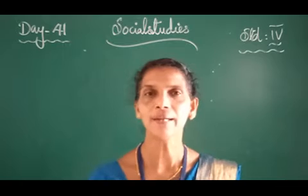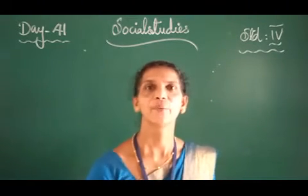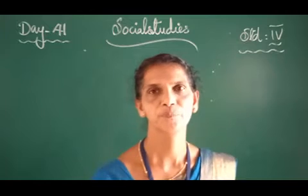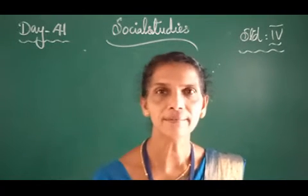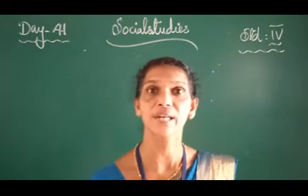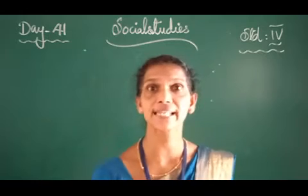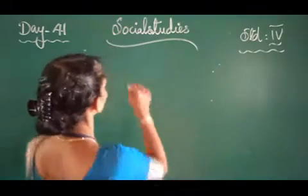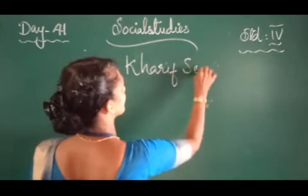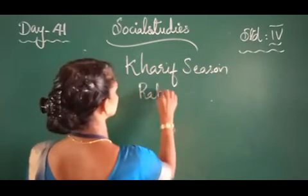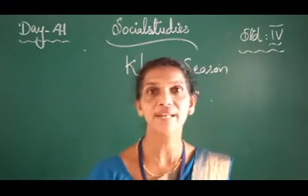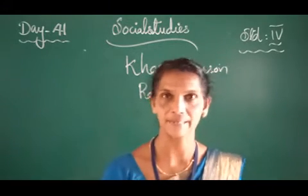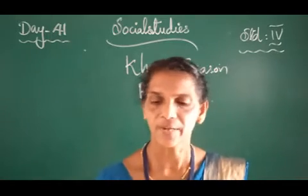Cash crops include sugarcane, cotton, and jute. Tea, coffee, and rubber are also cash crops, but as they are grown in plantations, they are called plantation crops. Now, mainly there are two main agricultural seasons in India — they are Kharif season, K-H-A-R-I-F, and Rabi season, R-A-B-I.